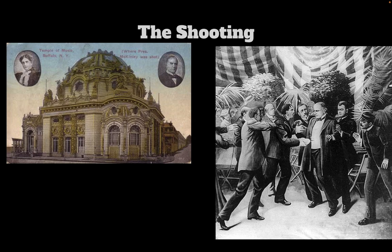McKinley, being the good politician he was, instantly reached out with his left hand to shake Czolgosz's concealed hand — when a .32 caliber Iver Johnson safety automatic revolver was fired into him at 4:07 p.m. Czolgosz was quickly tackled.